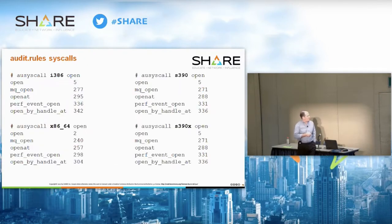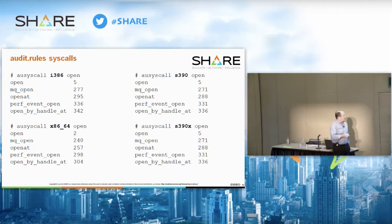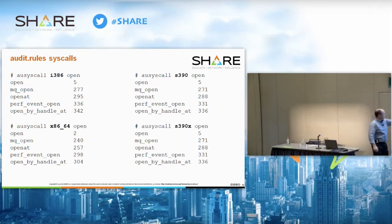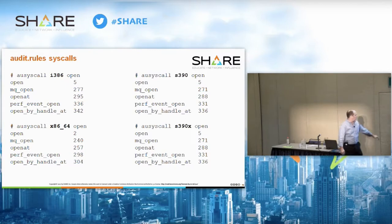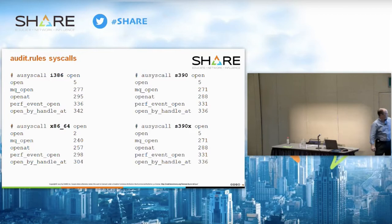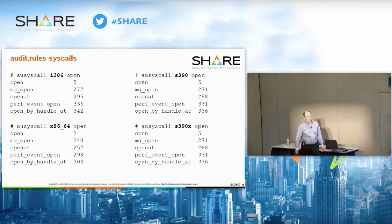Using ausyscall, you can look up what a syscall number maps to — for example, searching 'open' will match everything with that word and list the number. It works both directions: you can look up by name or by number. So if you're trying to figure out an open call or an exec call, you can use ausyscall.